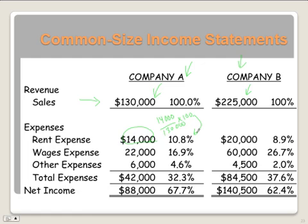That way you can look at it and decide: comparing these two companies, you might automatically assume that Company B is better because their sales were higher. But really, Company A is actually better because their net income as a percentage of sales is higher. You would have assumed the same thing for Company B because their net income in dollars is higher, but their net income as a percentage of sales is lower — meaning their expenses are higher relative to their sales than Company A's. So you should now be able to compare income statements within one company using trend analysis, and convert income statements to common size to compare two companies.